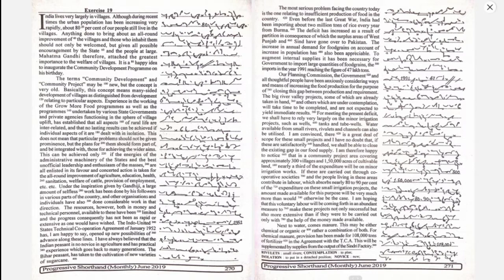I am therefore happy to notice that in a community project area covering approximately 300 villages and 150,000 acres of cultivable land, nearly a third of the expenditure will be on minor irrigation works.